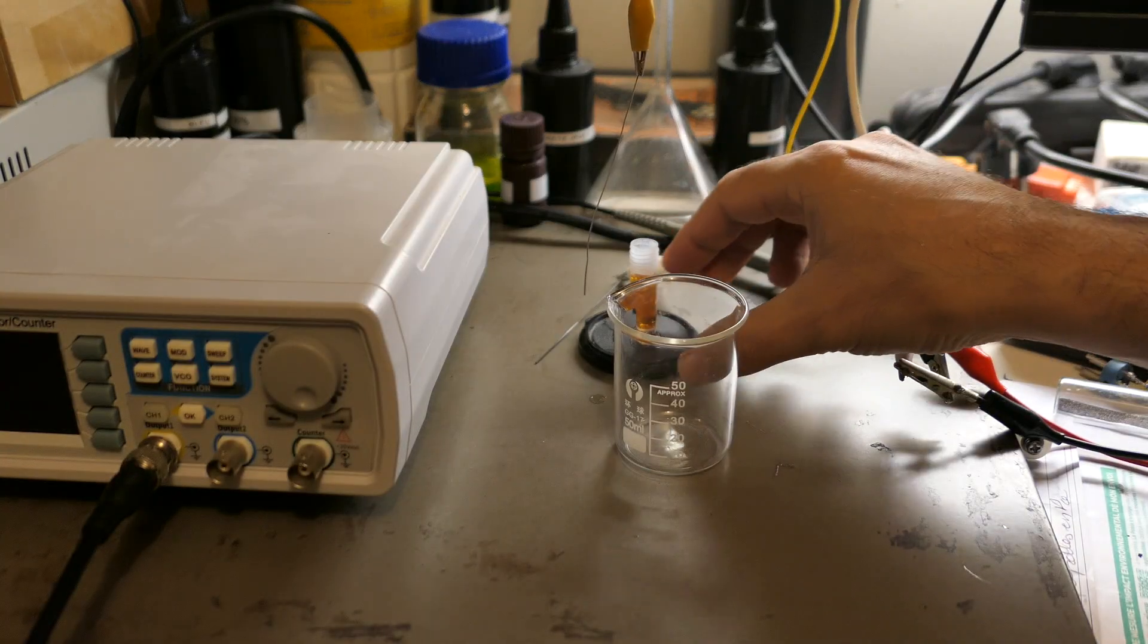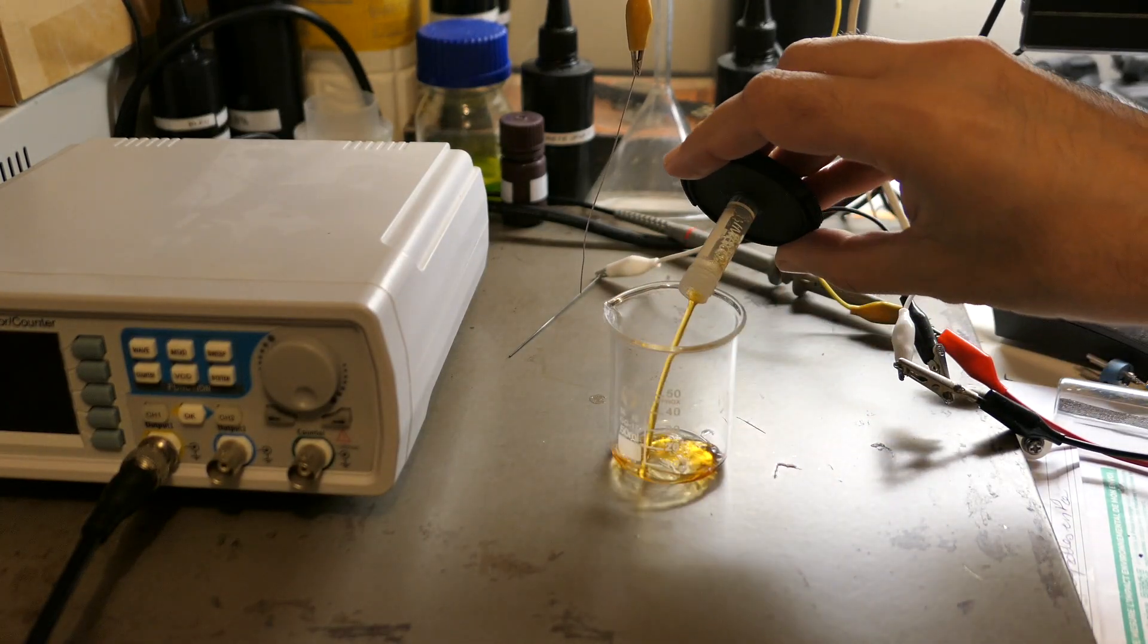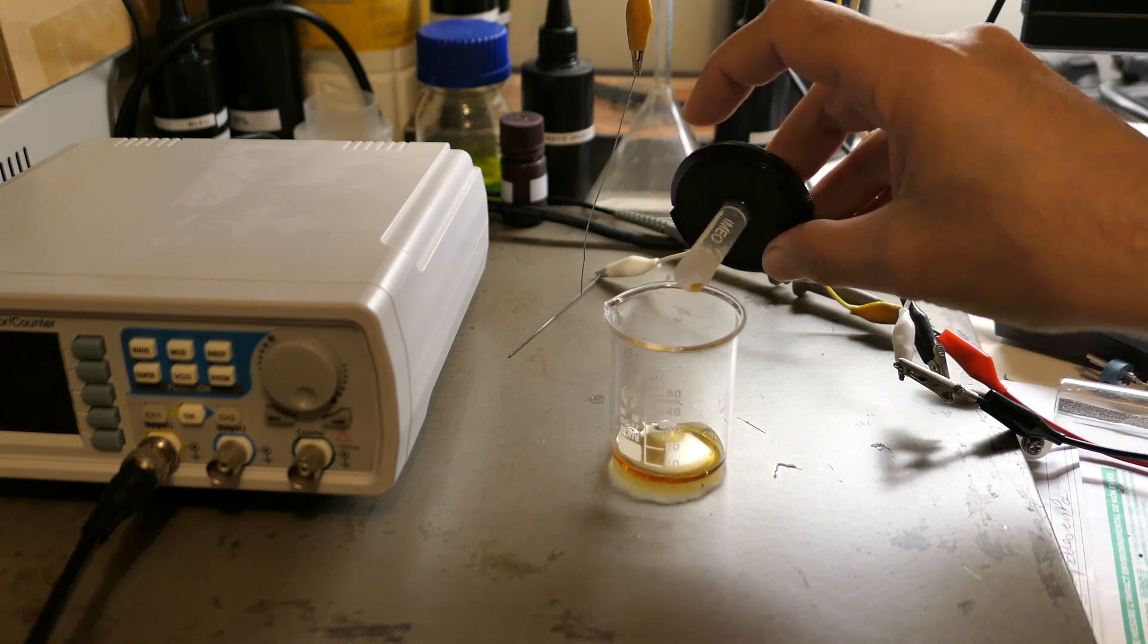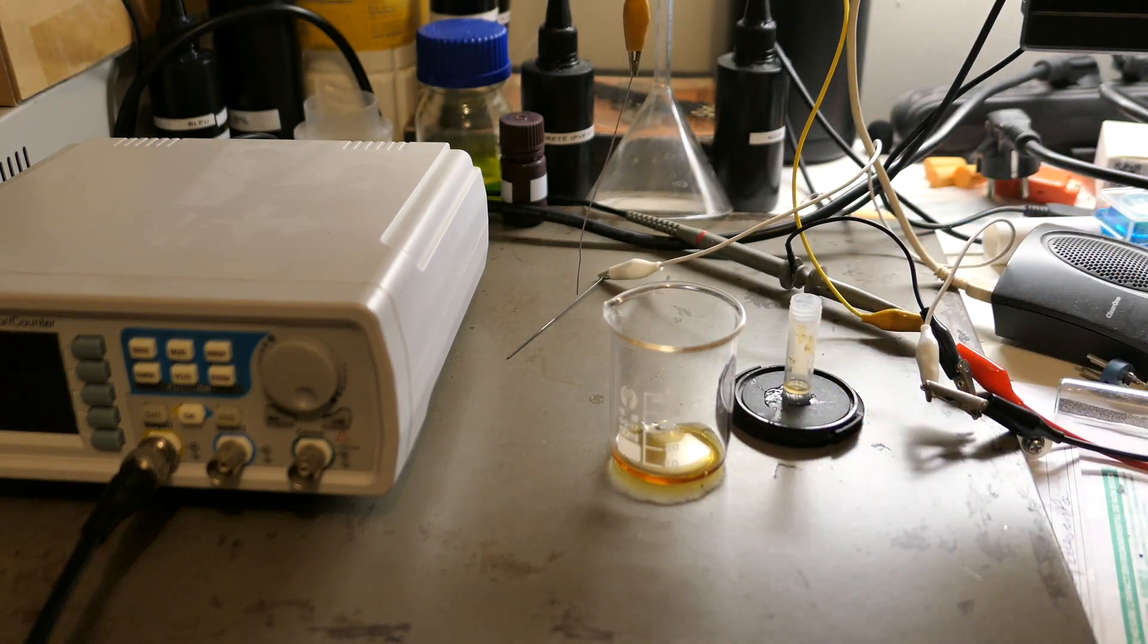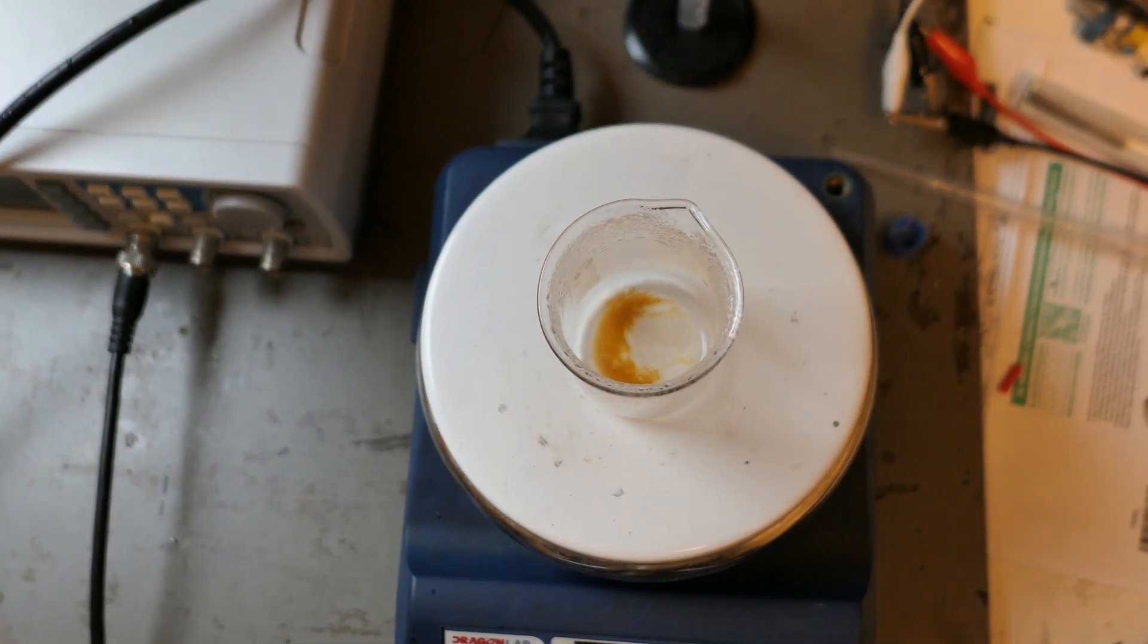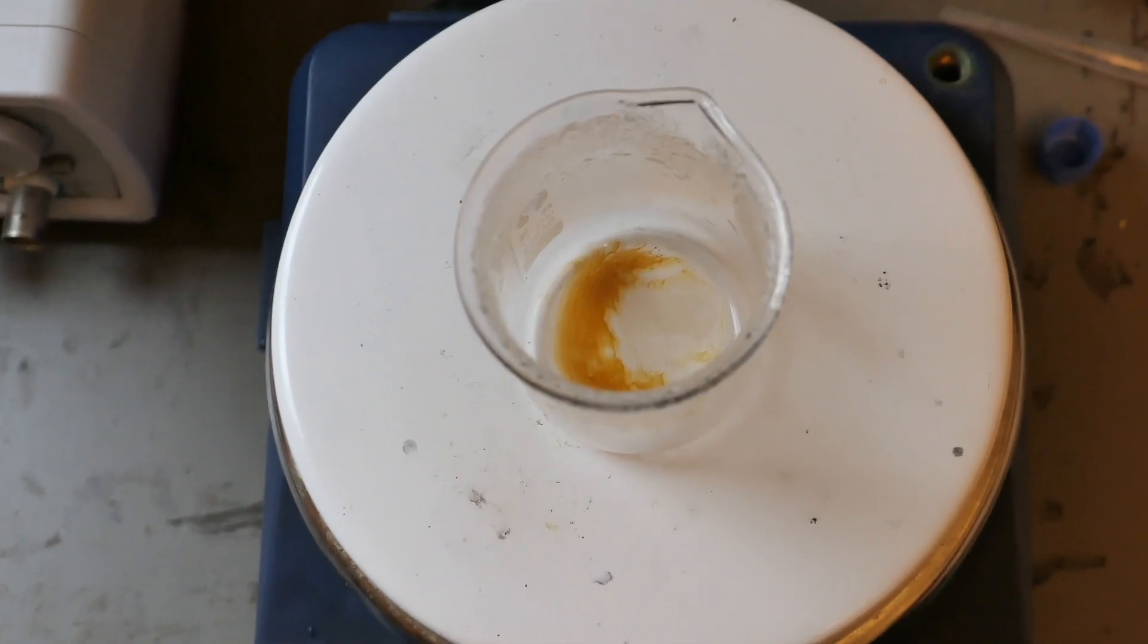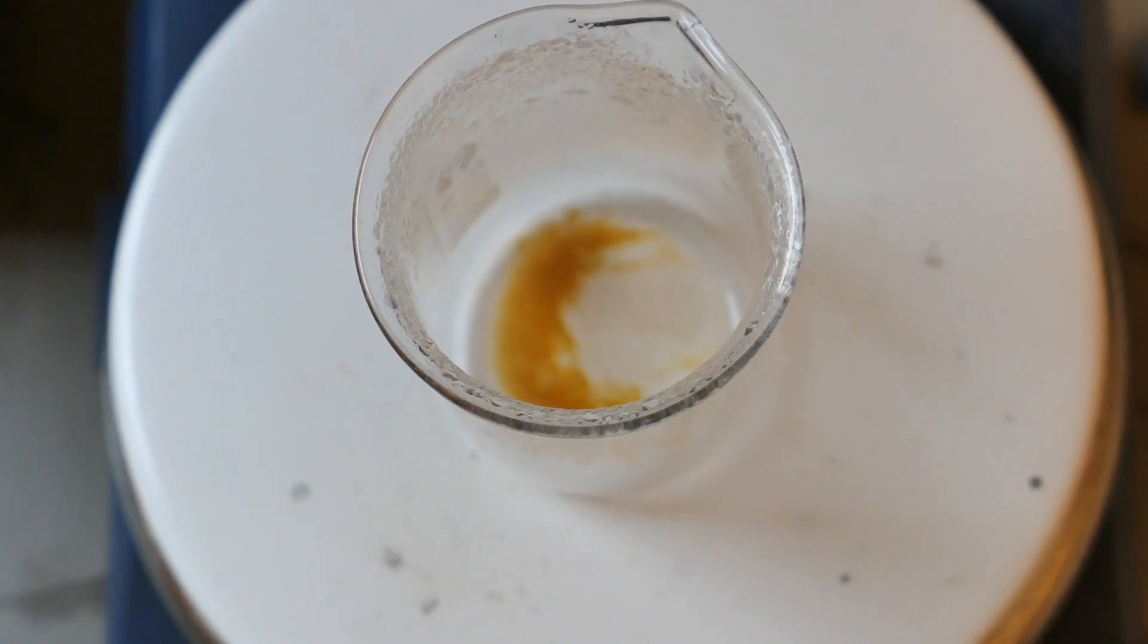Next, I'll evaporate the hydrochloric acid by heating the solution. The remaining orange residue is the hexachloroplatinic acid that has been formed. It's a small amount, but it's more than enough for electrode plating.